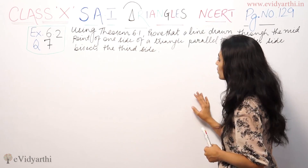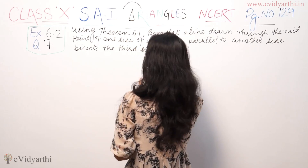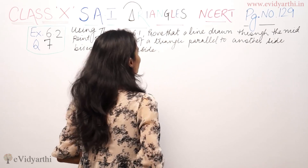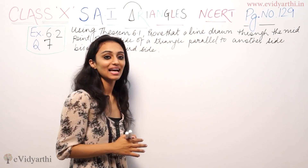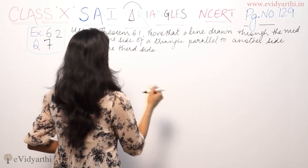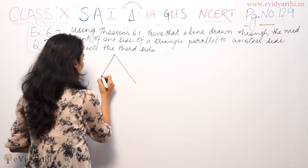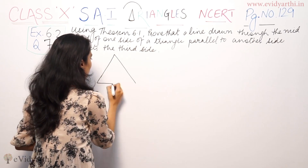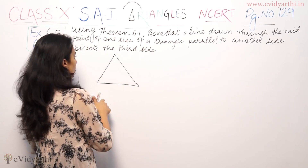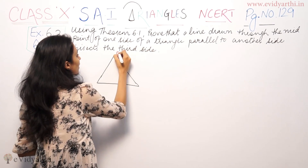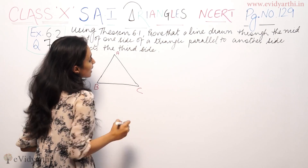Today we are using Theorem 6.1 to prove that a line drawn to the midpoint of one side of a triangle, parallel to another side, bisects the third side. We have a triangle here with vertices A, B, and C.